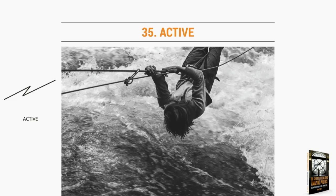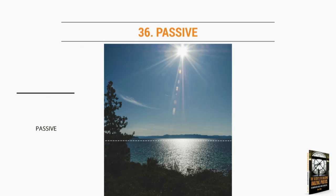On the other hand, this is Lake Tahoe — flat is passive. If you're taking pictures and you want to tell a story about how active you were on vacation and you take a picture of everybody lying on the beach, that's going to be a mixed message. So when you know these mood lines, you can start to think of them as a set of tools that you can use and bring into your work or not, depending on the feeling you're trying to convey.